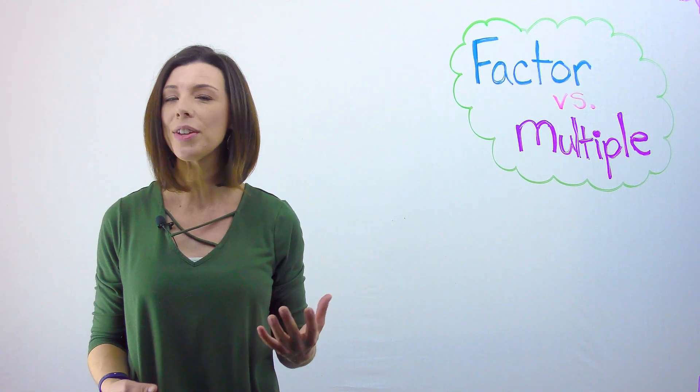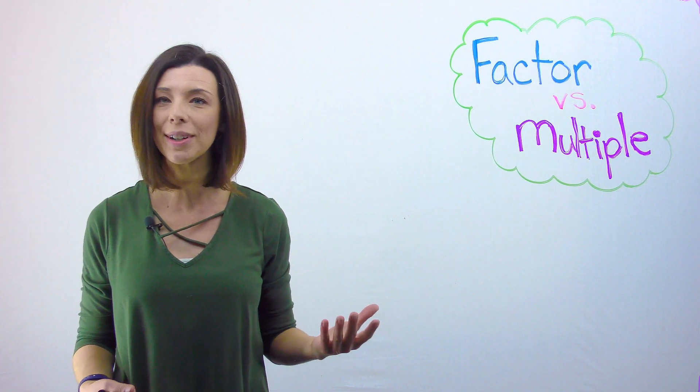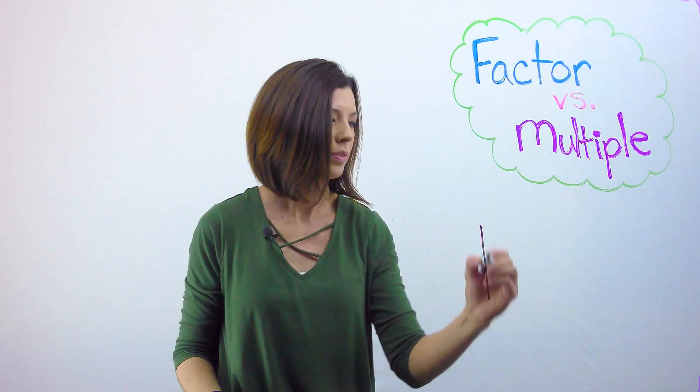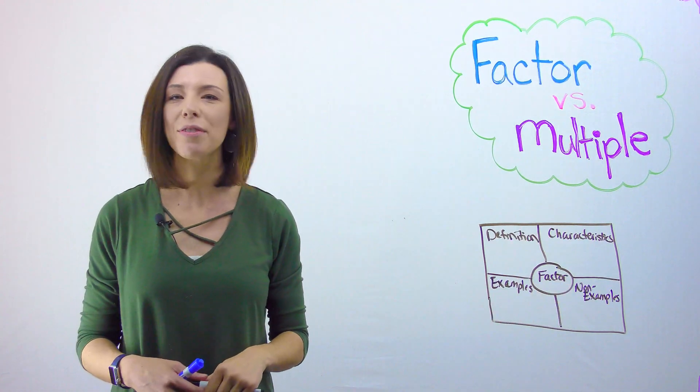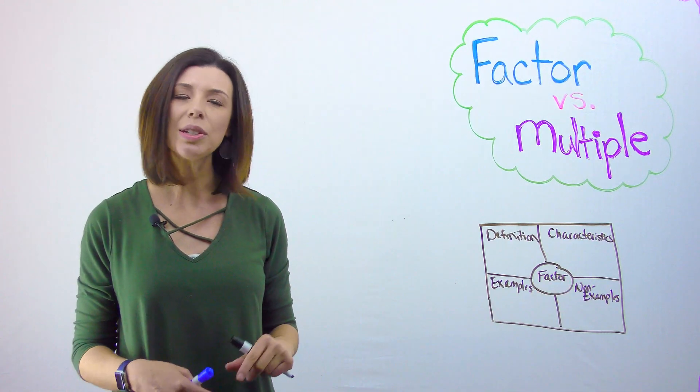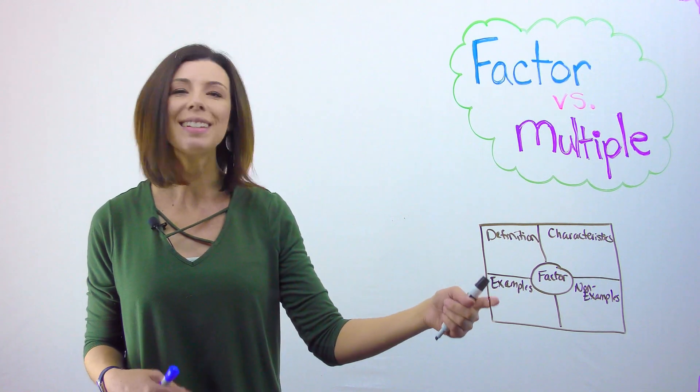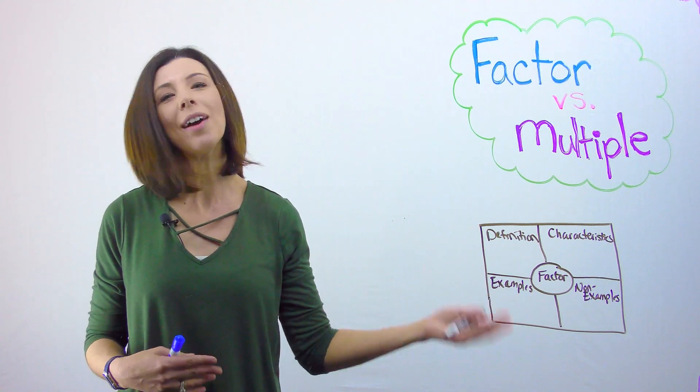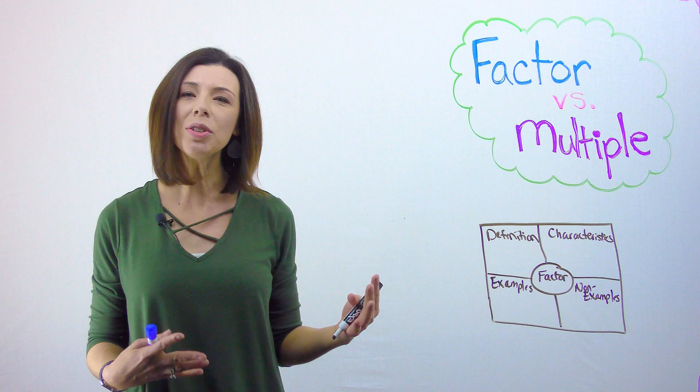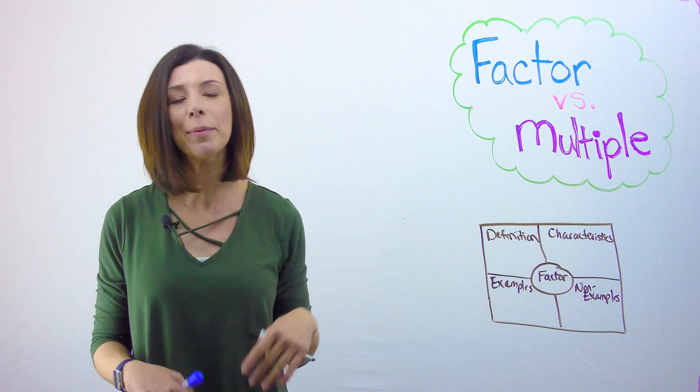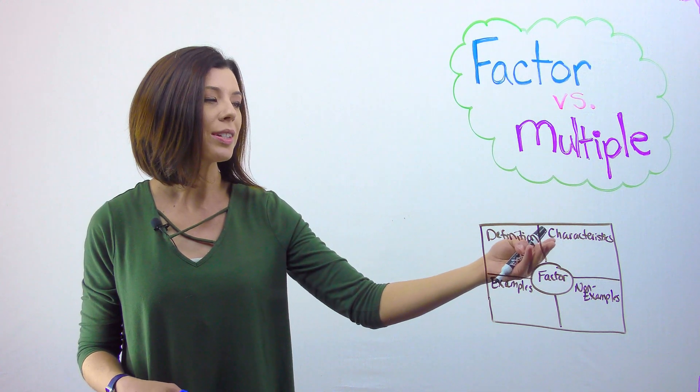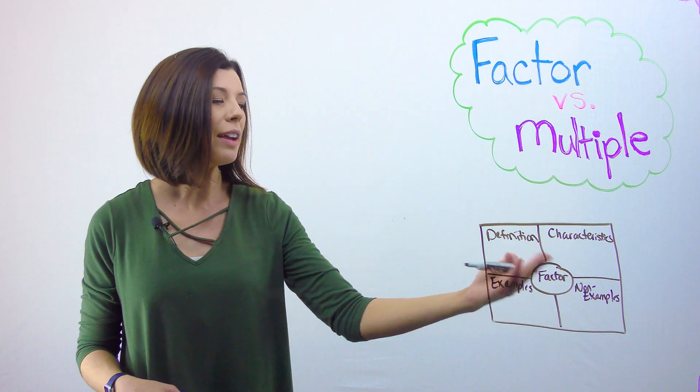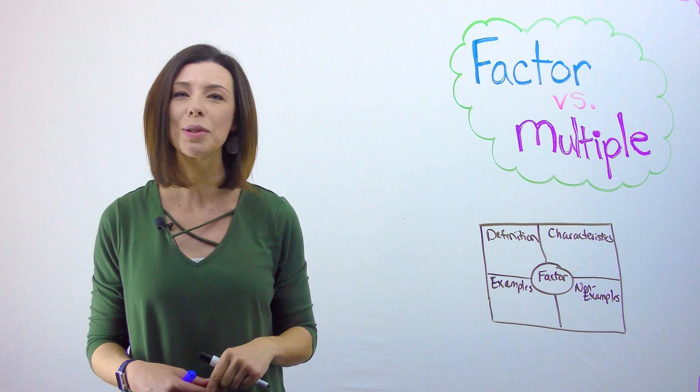We're going to use a strategy that is typically used when we introduce new vocabulary terms, but we're going to use it in math. Here's what's great about the Frayer model. It allows us to give students examples and non-examples without giving them a definition. You can also use it by giving them a definition and letting them come up with their own examples and non-examples. They can also determine the characteristics. You'll see that in the middle I've got factor and then we're going to do one for multiple as well.